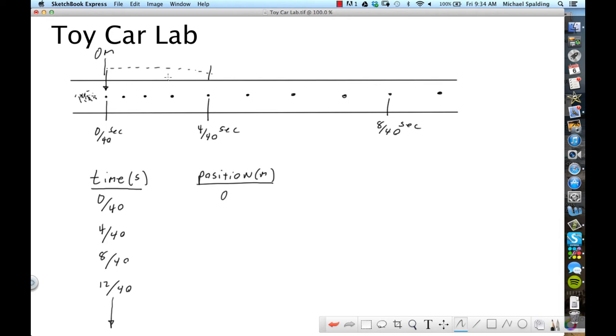So how are you going to get this measurement in meters? Well, let's say for example that you find out that this position right here, say that you measure it to be 2.4 centimeters. What is 2.4 centimeters in meters? 0.024. You divide by 100. 0.024 meters.